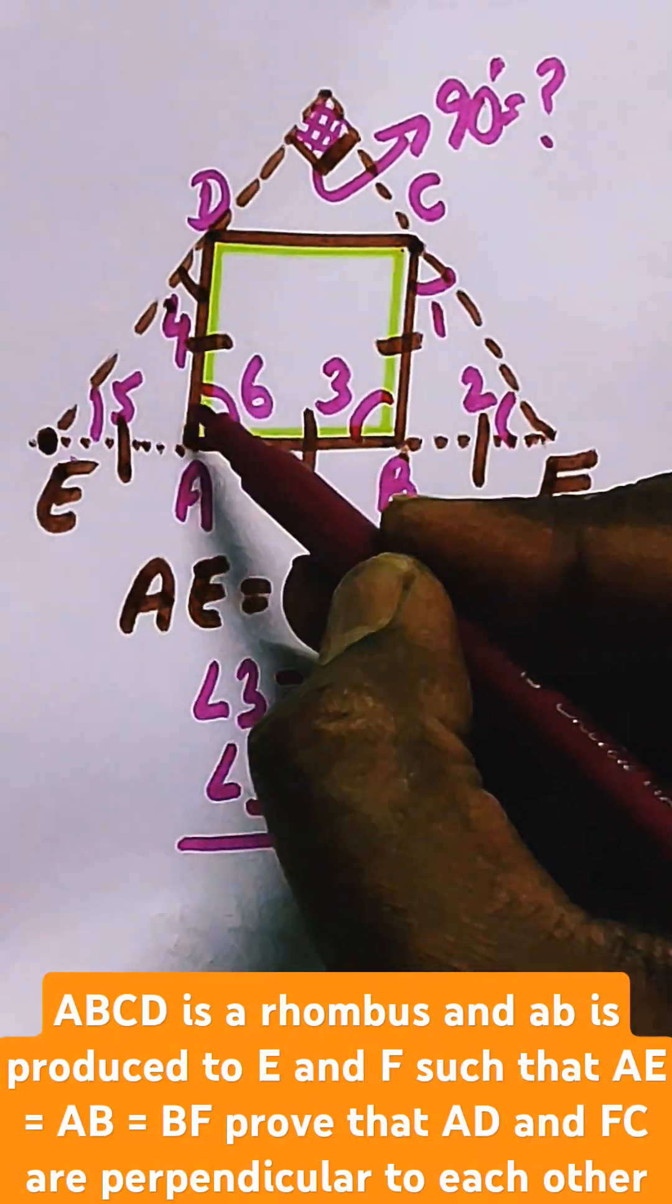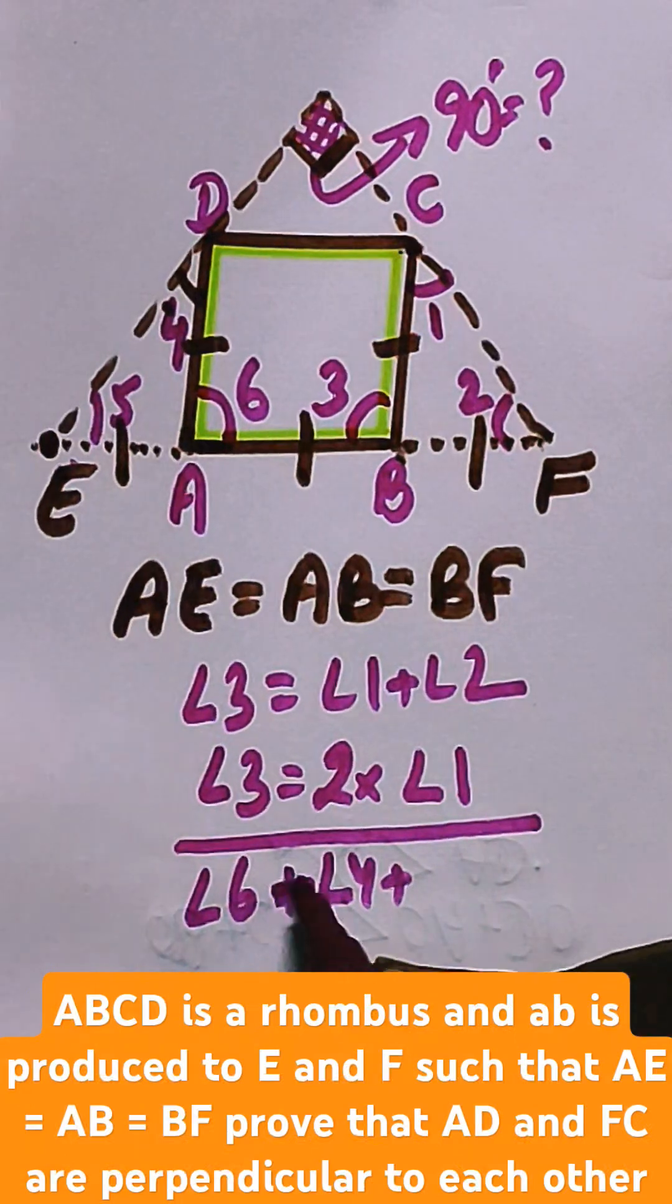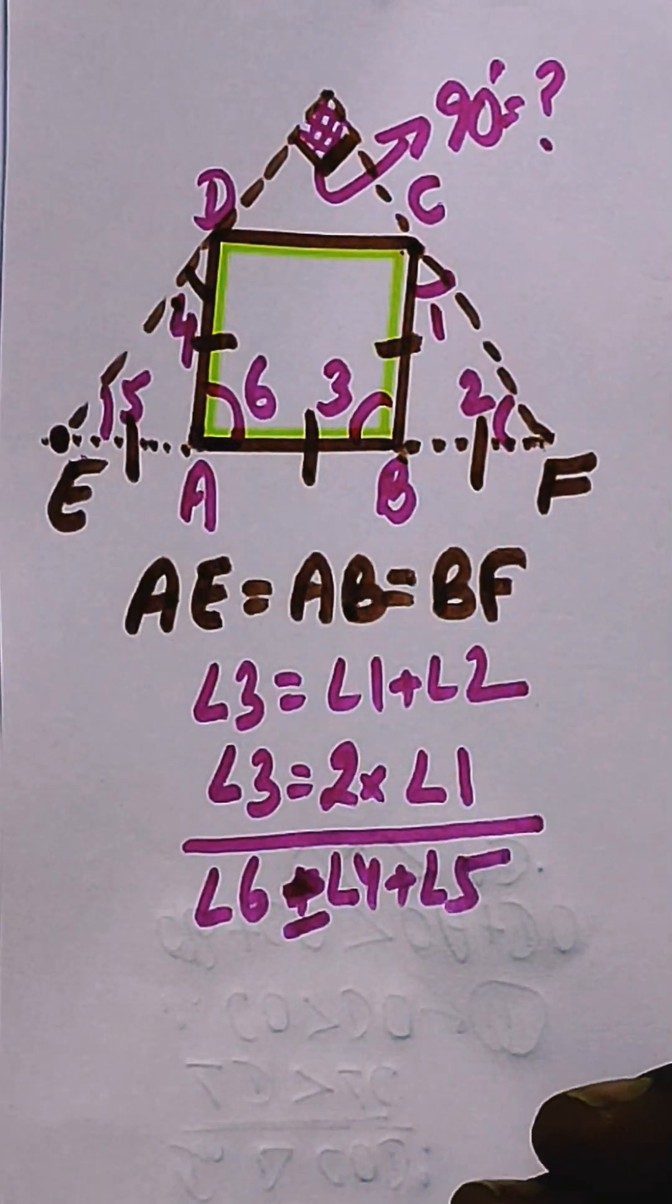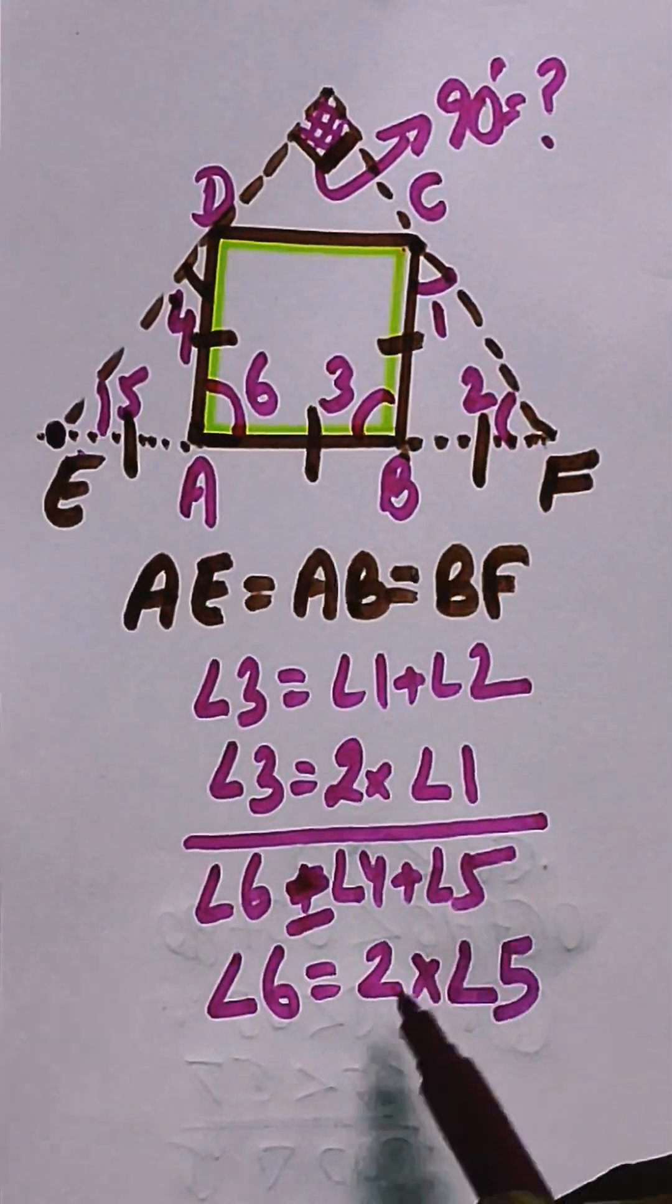If this angle is 6, then angle 6 equals angle 4 plus angle 5, which can be written as 2 times angle 5 because 4 and 5 are equal.